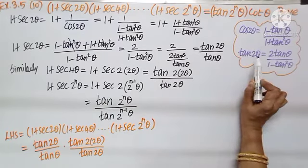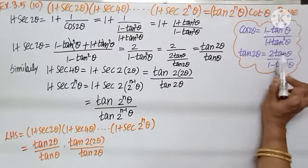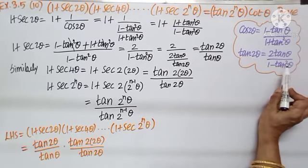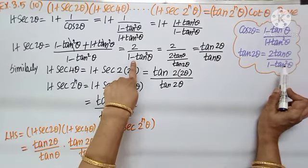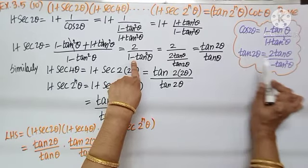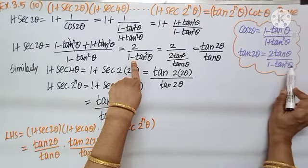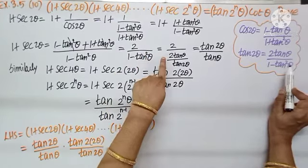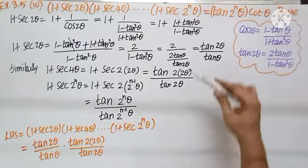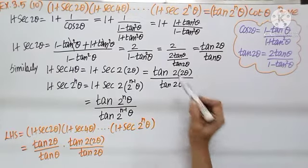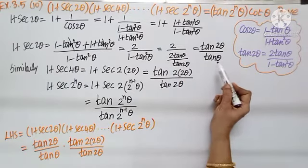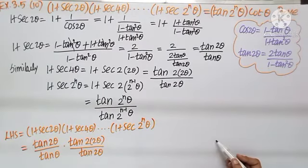We get 2 by 1 minus tan²θ. To express using the tan 2θ formula: tan 2θ equals 2 tan θ by 1 minus tan²θ. So 1 minus tan²θ equals 2 tan θ by tan 2θ. Substituting: we get 2 divided by (2 tan θ by tan 2θ), which simplifies to tan 2θ by tan θ.